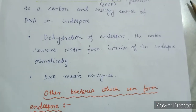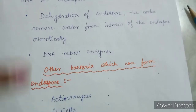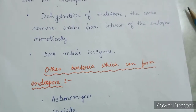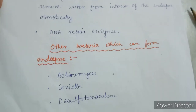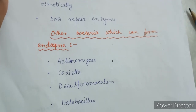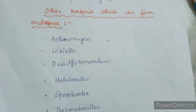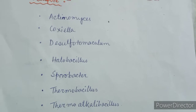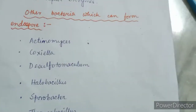Other bacteria apart from Bacillus and Clostridium which can form endospores include Actinomyces, Coxiella, Desulfotomaculum, Halobacillus, Sporovactor, Thermobacillus, Thermoalkalibacillus, etc.